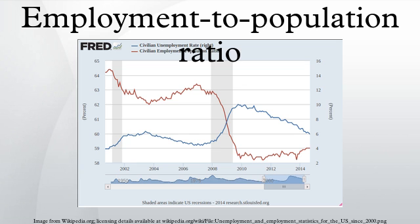Employment-to-population ratio in the world: in general, a high ratio is considered favorable, while the economies with low ratios are generally situated in the Middle East and North Africa. Employment-to-population ratios are typically higher for men than for women. Nevertheless, in the past decades, the ratios tended to fall for men and increase in the case of women, which made the differences between both to be reduced.